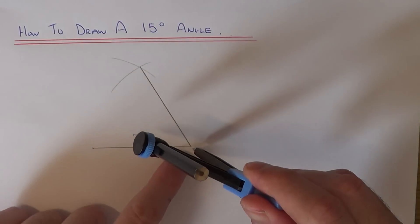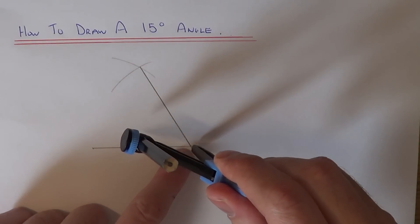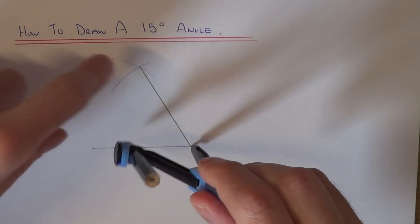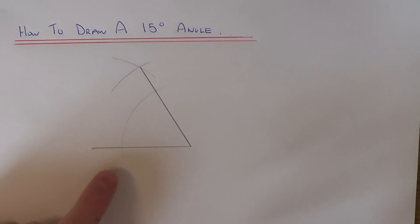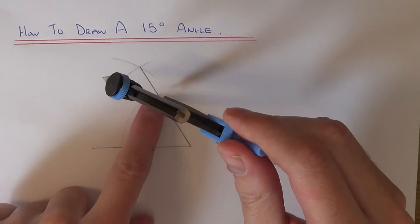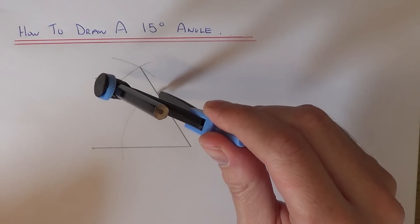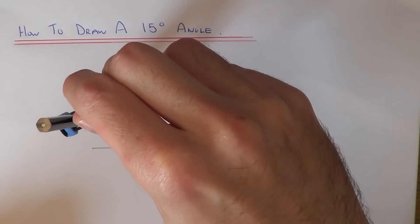Put your compass point here and do an arc going across the two lines that we have. Now move your compass to these two intersection points and do another two arcs.